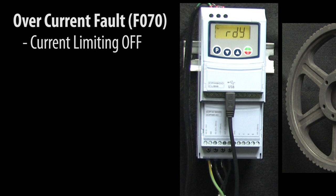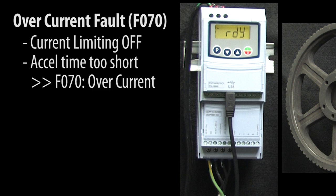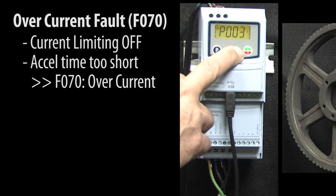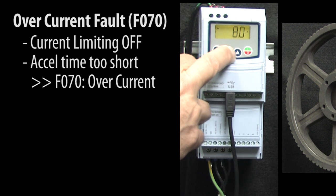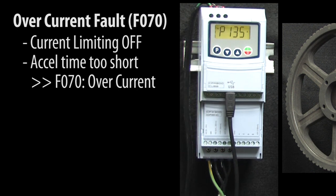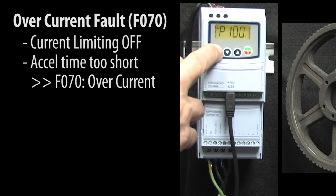But if you turn that current limiting function off and enter a really short acceleration time, you will get an overcurrent fault. Let's try it. I'll go to the current limiting threshold in parameter 135 and set it to a big number, and that will disable current limiting. If we go to parameter 100, we see we still have a really short acceleration time, so that's fine.